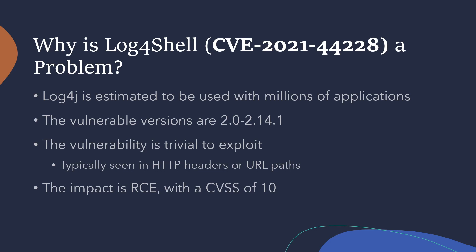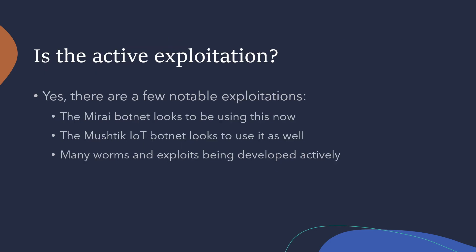So that gives you a bit of an intuition about why this is a problem — it impacts so many different systems and gives an attacker the ability to do pretty much whatever they want. Then we get into the more scary part, which is the fact that there is already active exploitation of this vulnerability. Because of how easy it is to exploit, there are a lot of different people going out and exploiting it. Some I found looking around the news: the Mirai botnet and the Mushtik IoT botnet both appear to be using this exploit.